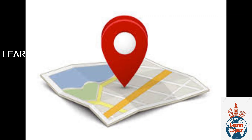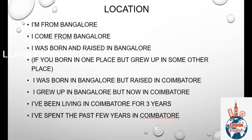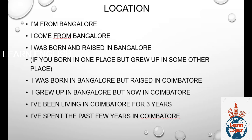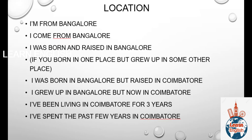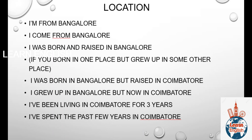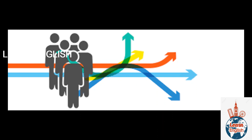For location, while telling about where you are from, you can start with: I'm from Bangalore, I come from Bangalore, or I was born and raised in Bangalore. If you were born in one place but grew up in another, you can say: I was born in Bangalore but raised in Coimbatore, or I grew up in Bangalore but now live in Coimbatore. You can also specify how long you've been there — for example: I have been living in Coimbatore for three years, or I have spent the past few years in Coimbatore.